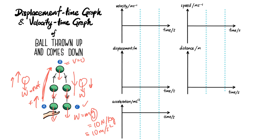Now let's look at how to draw the velocity-time graph. At point A, the moment it leaves your hand, that will be the maximum speed — because as you go up you get slower and slower, so position A has the highest speed. There will be a constant deceleration because it's under acceleration due to free fall, so the deceleration is a constant negative 10. Point B is where speed is zero, and from B to C the speed increases.